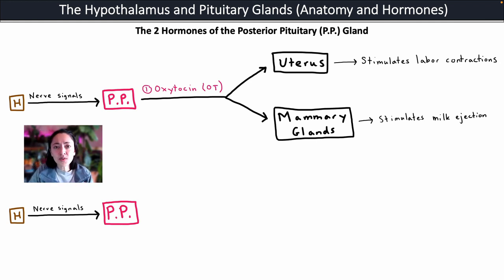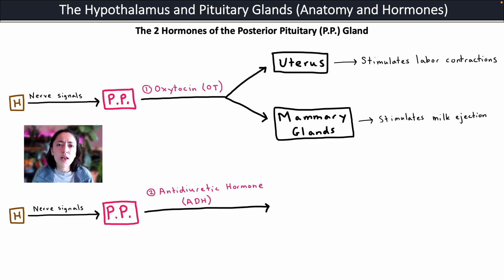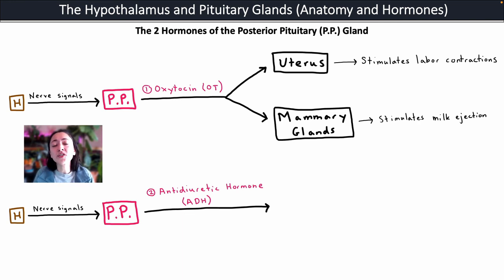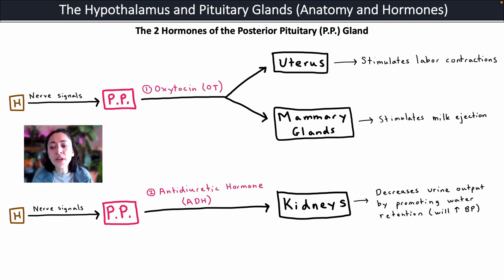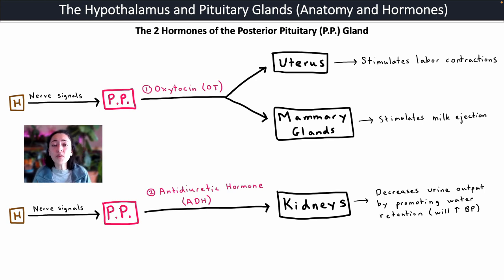Finally, the last hormone is anti-diuretic hormone or ADH. Diuretics like coffee make you urinate more, so an anti-diuretic reduces urine output. Anti-diuretic hormone targets the kidneys and decreases urine output by promoting water retention — causing the body to hold on to more water. When you hold on to more water, that increases blood volume and therefore blood pressure. Those are the major hormones produced by the hypothalamus and pituitary glands.